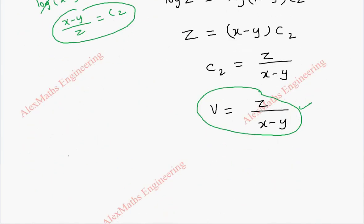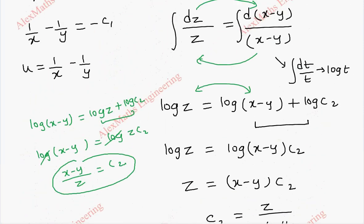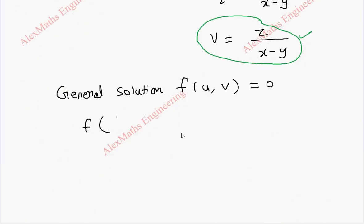Now, after getting u and v we can go for giving the general solution which is f of u comma v equal to 0. So, f of u is 1 by x minus 1 by y. So, 1 by x minus 1 by y comma what I got here is z by x minus y. Even if you get reciprocal of this it is fine. Equal to 0.